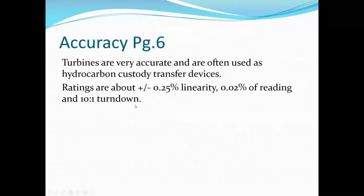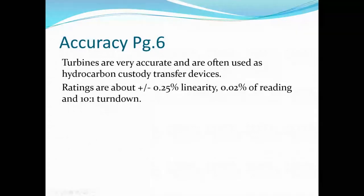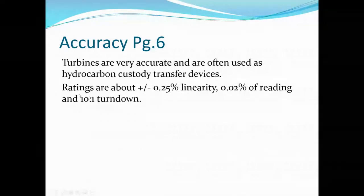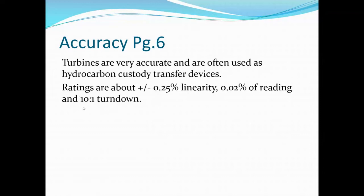Accuracy for turbine meters is very good — often used in hydrocarbon custody transfer. Ratings are about plus or minus 0.25% on linearity, 0.02% of reading for accuracy, and a 10-to-1 turndown ratio. Turndown indicates how accurately the meter measures throughout a wide operating range. For example, a 1,000 liter per minute turbine meter with 10-to-1 turndown would be equally accurate at 1,000 liters and at 100 liters per minute.